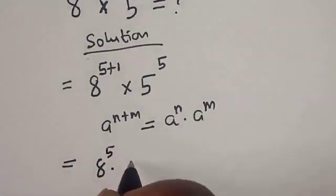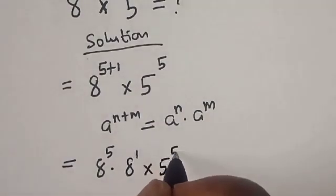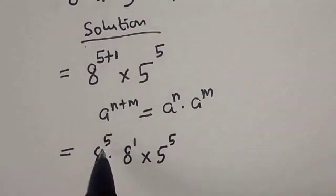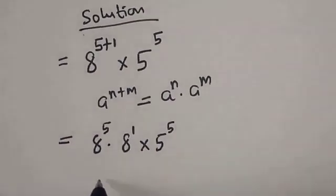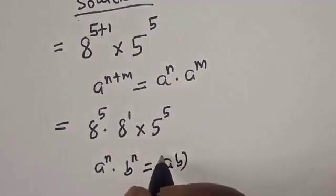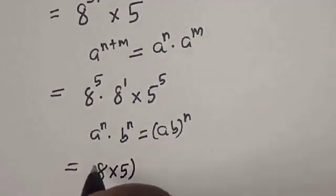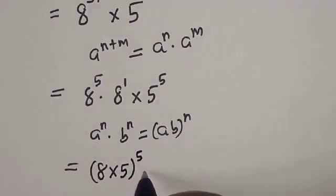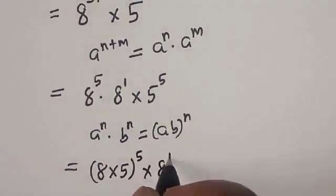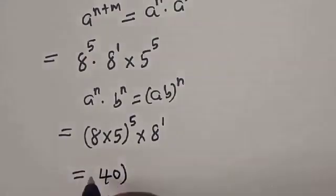We get 8 to the power of 5 multiplied by 8 raised to power 1, then multiplied by 5 to the power of 5. Since both have power of 5, we apply the rule: a raised to power n multiplied by b raised to power n equals a·b to the power of n. So we get 8 multiplied by 5, to the power of 5, multiplied by 8 raised to power 1.